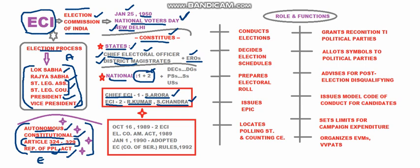Apart from these main heads, ECI also has Deputy Election Commissioners, Director Generals, Principal Secretaries, Secretaries, and Under Secretaries working to assist the one-plus-two Election Commissioners in holding elections.